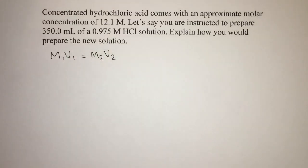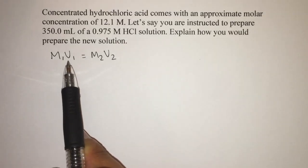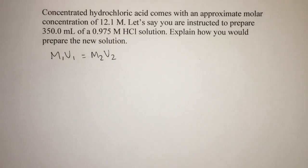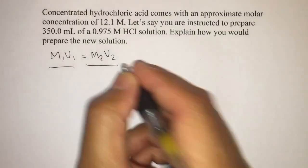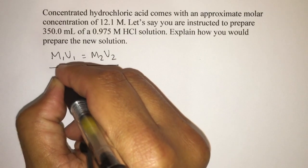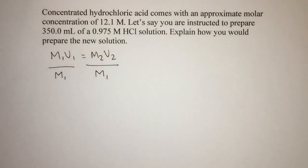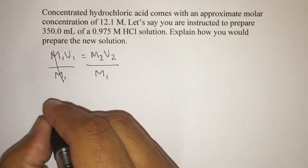So how would we prepare this solution? Well, first thing is let's go find our initial volume. How much volume of that 12.1 molar solution are we going to need? So a little bit of algebra here. Let's look for V1. That means we have to divide both sides by M1. So M1's will cancel on this side. And so here's our equation.